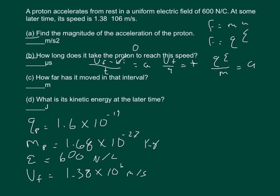How far is it moved in that interval? So delta X is equal to the initial velocity times time plus one half AT squared. And the initial velocity again is zero, so the distance is going to be equal to one half of AT squared.